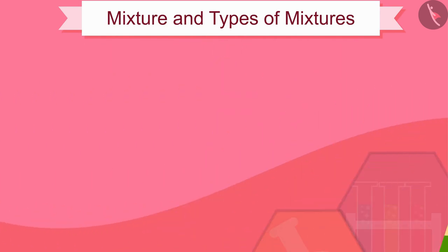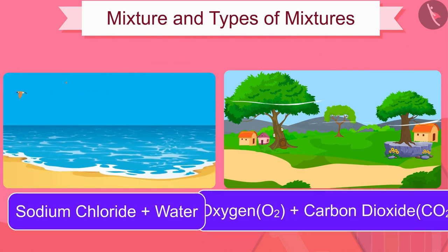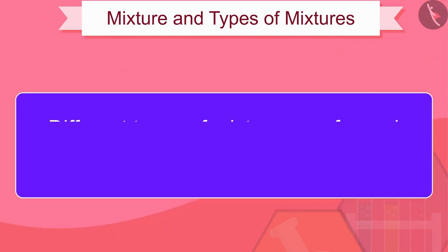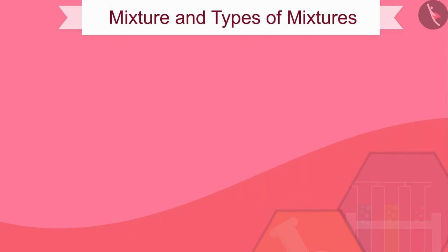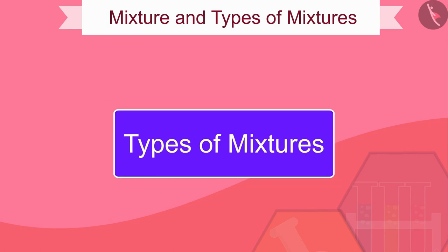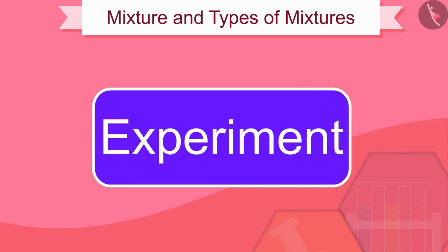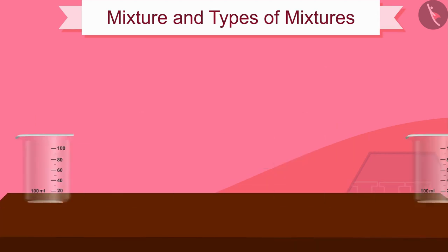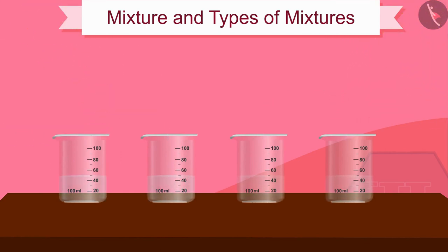This is because they are made by mixing different ingredients. Different types of mixtures are formed according to the nature of the components. Let us now discuss the types of mixtures through an experiment. Gather three of your friends for this experiment, and take 50 ml of water in four beakers.